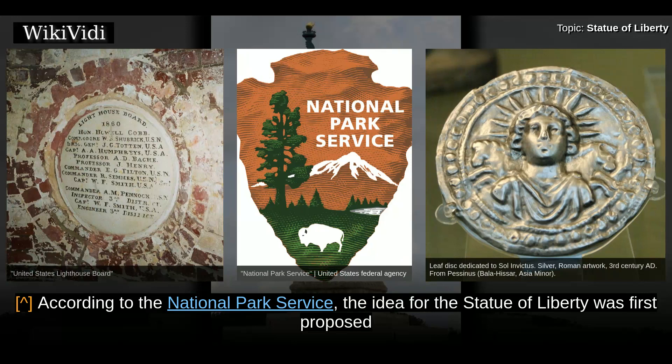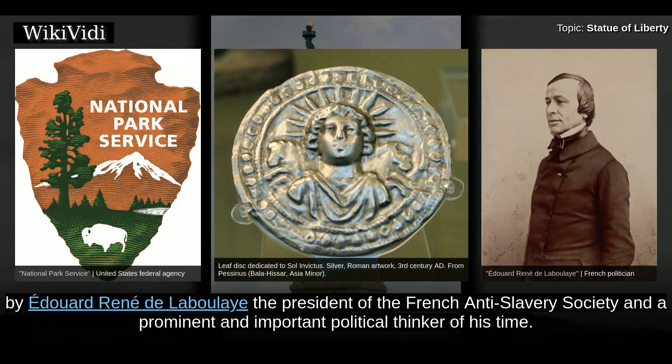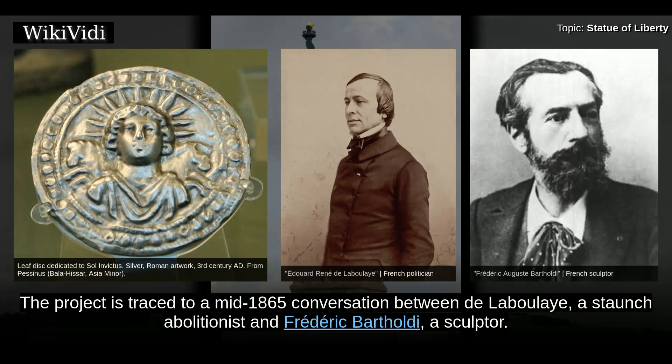Origin. According to the National Park Service, the idea for the Statue of Liberty was first proposed by Édouard-René de Laboulaye, the president of the French Anti-Slavery Society and a prominent and important political thinker of his time. The project is traced to a mid-1865 conversation between de Laboulaye, a staunch abolitionist, and Frédéric Bartholdi, a sculptor.